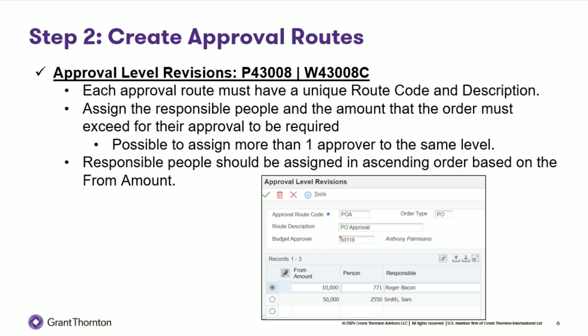The second step in the setup is to create the approval routes. In the Approval Level Revisions program, each approval route must have a unique route code and description. Here, you also assign the responsible people and the amount that the order must exceed for their approval to be required. It is possible to assign more than one approver to the same level, and responsible persons should be assigned in ascending order based on the from amount.